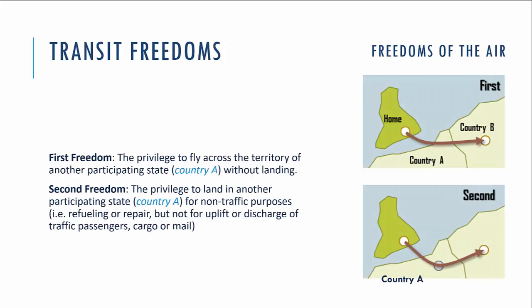Now let's discuss the contracts and agreements signed during the Chicago Convention of 1944. The first mandatory contract was the Transit or Technical Agreement, giving contracting states the transit freedoms. The first freedom is the privilege to fly across the territory of another participating state without landing. The second freedom is the privilege to land in another participating state for non-traffic purposes such as refueling or repairing, but not for taking on or discharging traffic like passengers, cargo, or mail.